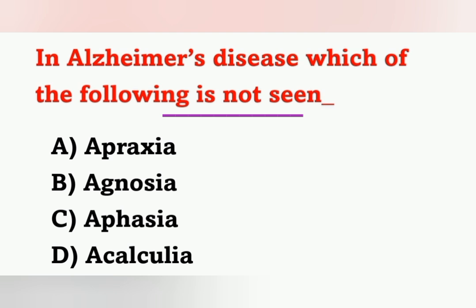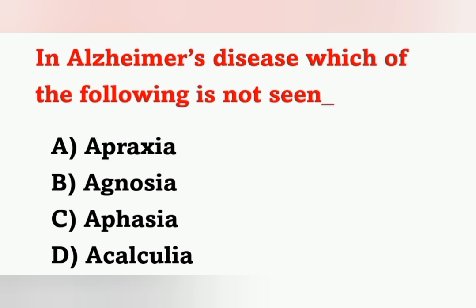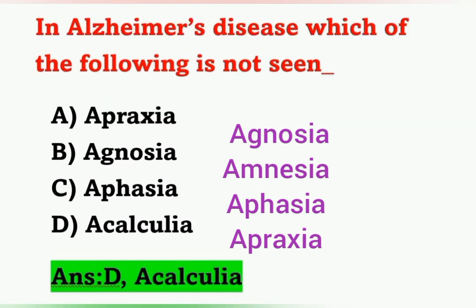Next question: In Alzheimer's disease, which of the following is not seen? Options: A) Apraxia, B) Agnosia, C) Aphasia, D) Acalculia. Alzheimer's disease is an irreversible form of senile dementia — loss of memory. In Alzheimer's patients, they may experience agnosia, amnesia, aphasia, and apraxia. They will not experience acalculia. The answer is option D.